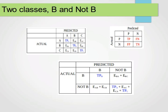If we want that for class B, we follow the same approach. The true positive for class B is taken directly from the original confusion matrix. The number of false negatives will be the sum of row B excluding the true positive for B: EBA plus EBC. The number of false positives will be the sum of column B excluding the true positive for class B: EAB plus ECB. And the number of true negatives: we cross out column B and row B and then sum up the remaining values.